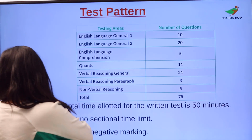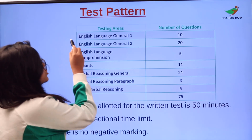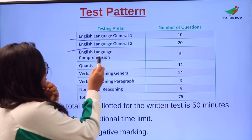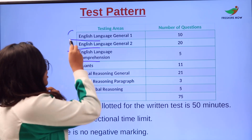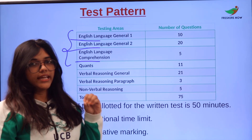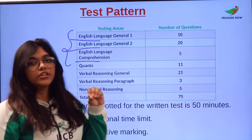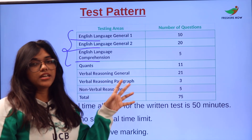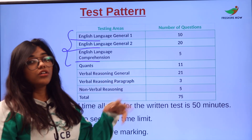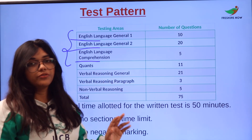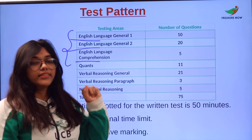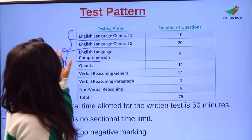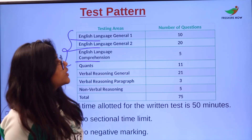This is the test pattern for the exam. You will be tested under these areas: English General 1, English General 2, and English Language Comprehension. All of this is related to English, where you will be dealing with topics like subject-verb agreement, synonyms, antonyms, sentence correction, and sentence completion. We will look into those topics in detail in the next part of the video.